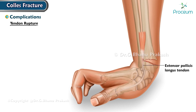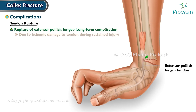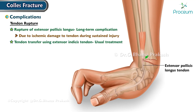Tendon rupture, specifically rupture of the extensor pollicis longus, can occur as a long-term complication of a Collis fracture due to ischemic damage to the tendon during the sustained injury. Tendon transfer using the extensor indicis tendon is the usual treatment for this condition.